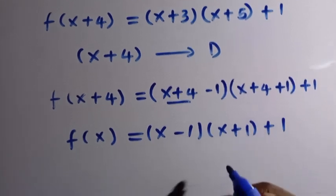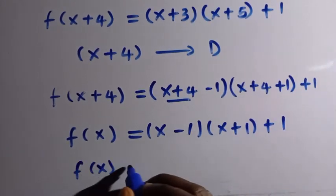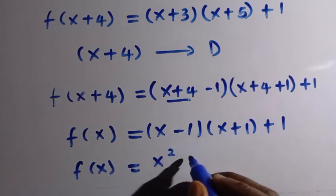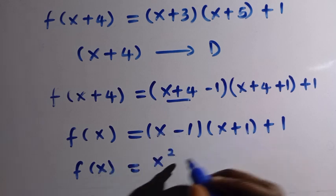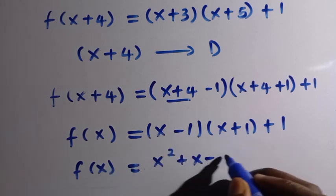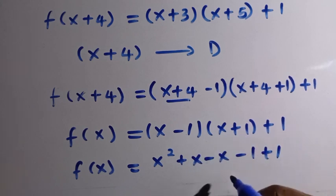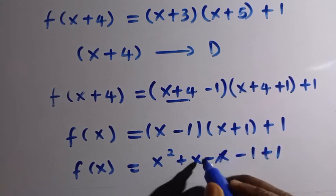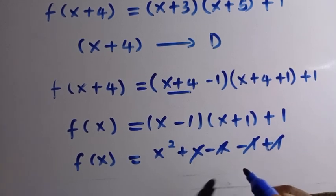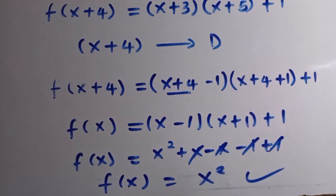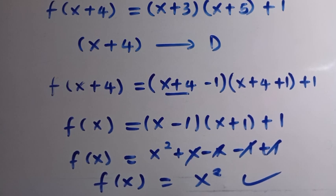Expanding: f of x equals x squared plus x minus x minus 1 plus 1. The plus x and minus x cancel, and the minus 1 and plus 1 cancel, so f of x equals x squared. This is how to solve this using form manipulation. We can also apply a second method.